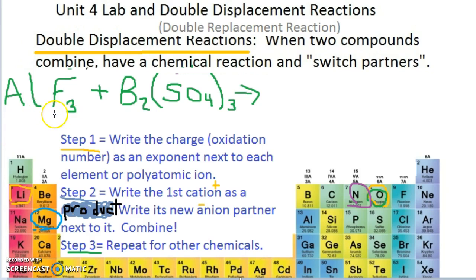Let's do another example. I have aluminum fluoride plus boron sulfate. So, let's go ahead and do step one. Write the charge or oxidation number as an exponent next to each element or polyatomic ion. So, what is our charge of aluminum? Aluminum is in group three. So, it has a plus three charge. Or, you could work backwards and say, well, I know that there's a three down here and that three came from the fact that aluminum has three electrons to get rid of. And so, in order to get rid of all three, it has to have three atoms of fluorine to give them to. Fluorine is in group seven. What's the charge? Minus one. And we knew that from the one down there, even though we don't write it.